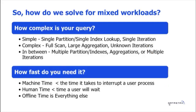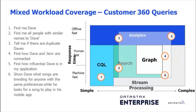So how do you solve for mixed workloads? It really comes down to two things: how complex is your query, or how fast do you need it? Complexity and speed. This is where I start talking about the DataStax Enterprise piece. At DataStax, we're the company behind Apache Cassandra, which itself is open source. DataStax Enterprise is where we're pushing into the commercial realm, expanding past basic Apache Cassandra to include more workloads than just CQL, tabular, and JSON — this is where we see search, analytics, and graphs, providing a single operational data layer that can perform all of these different workloads.